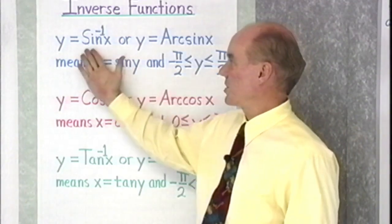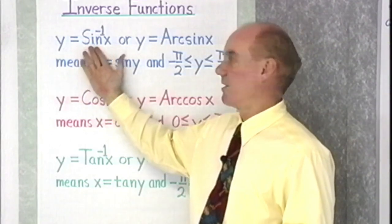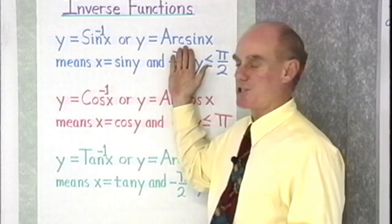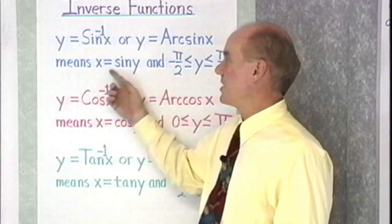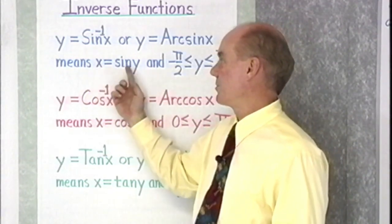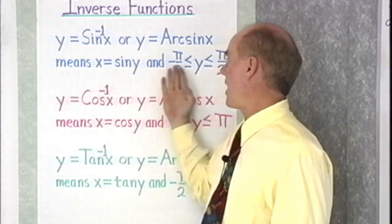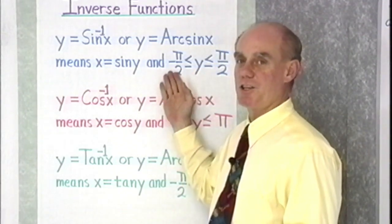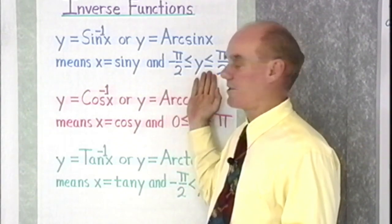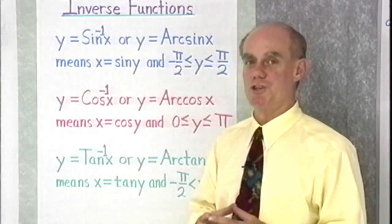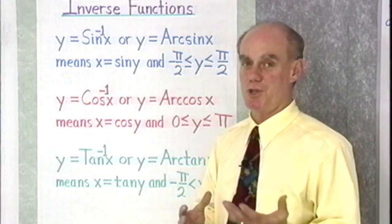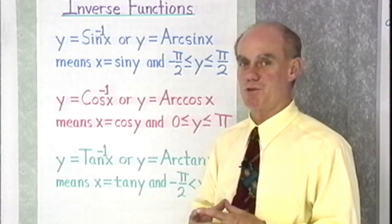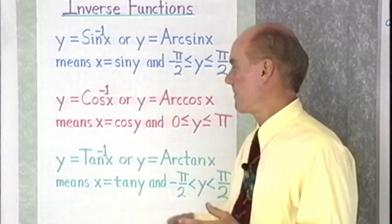So when you see expressions like y is the inverse sine of x, or y equal arc sine of x, what they mean is that x is equal to the sine of y, and y is between negative 90 degrees and positive 90 degrees if you're working in degrees, or between negative pi over 2 and positive pi over 2 if you're in radians.